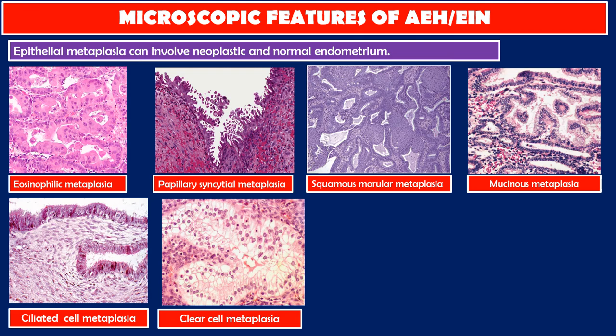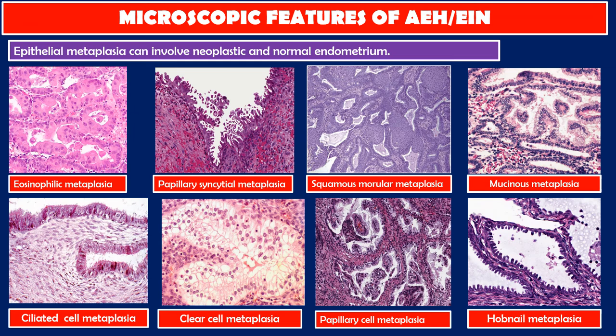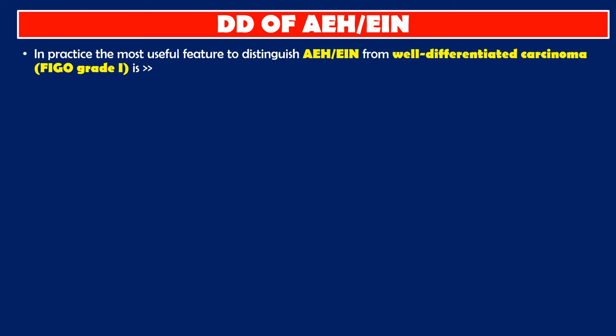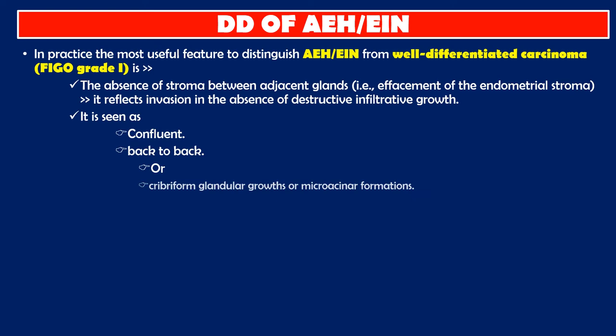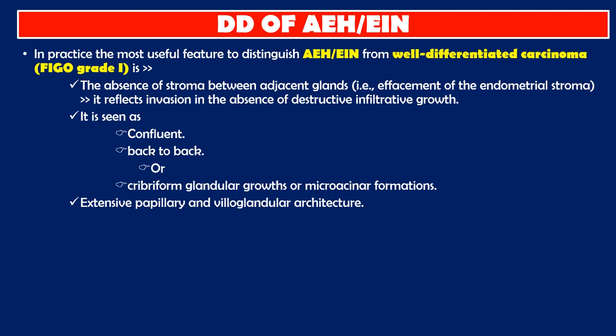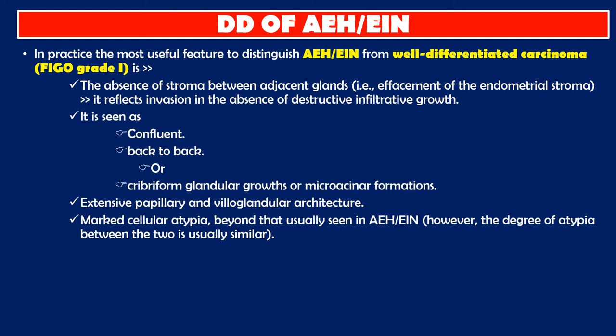Differential diagnosis of atypical endometrial hyperplasia: in practice, the most useful feature to distinguish atypical endometrial hyperplasia from well-differentiated carcinoma FIGO Grade 1 is the absence of stroma between adjacent glands — that is, effacement of the endometrial stroma, reflecting invasion. In the absence of destructive infiltrative growth, it is seen as confluent back-to-back or cribriform glandular growth, or microacinar formations, extensive papillary and villoglandular architecture, and marked cellular atypia beyond that usually seen in atypical endometrial hyperplasia. However, the degree of atypia between the two is usually similar.